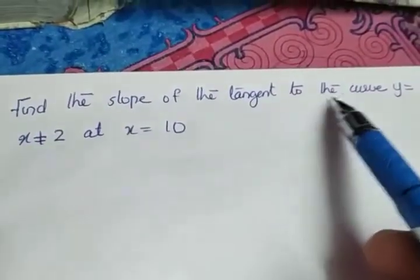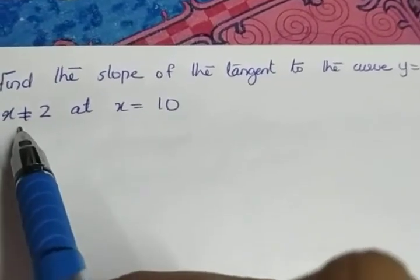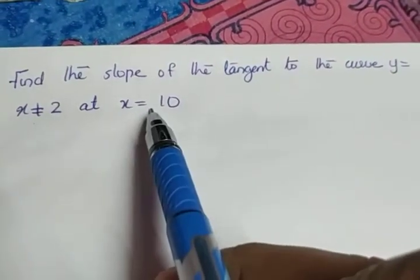The next one. Find the slope of the tangent to the curve y equals (x-1)/(x-2) where x not equal to 2, at x equal to 10.